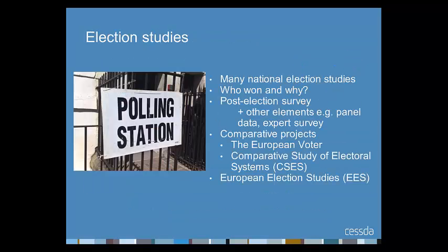Election studies are one of the richest sources of data available. Many countries have well-established academically directed election studies — those in the Scandinavian countries, Britain, Germany, and the Netherlands going back to at least the early 1970s. They are largely designed for testing competing theories about electoral behaviour, such as who won and why. Typically, the core part is a cross-sectional survey carried out a few months after the election, based on probability samples, with questions about vote choice, political orientations, and attitudes.